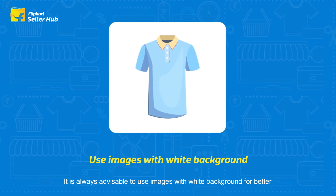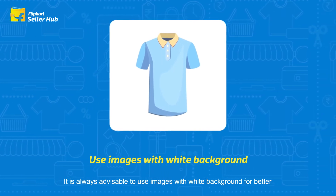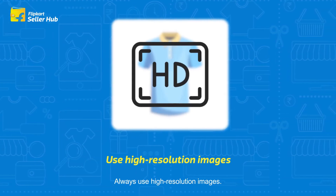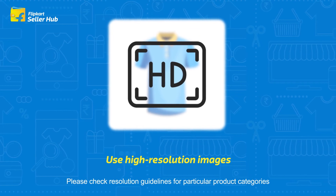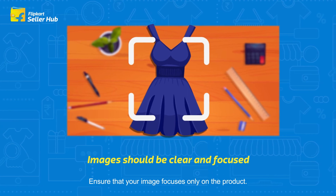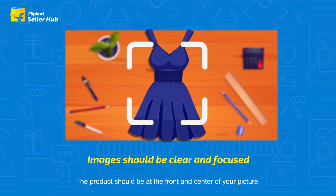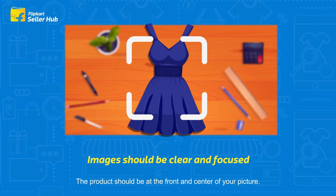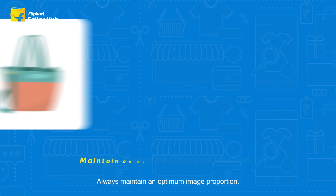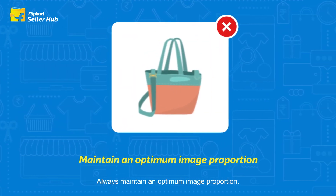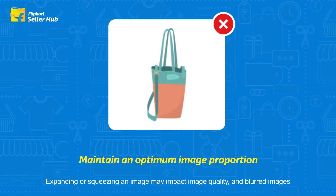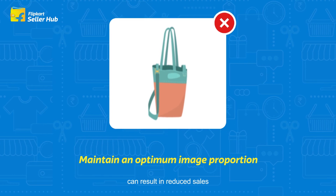Here are some important guidelines to remember while uploading product images. It is always advisable to use images with a white background for better and clearer visibility of the product. Always use high-resolution images — check resolution guidelines for particular product categories. Ensure that your image focuses only on the product; the product should be at the front and center. Avoid adding unnecessary objects to the picture.